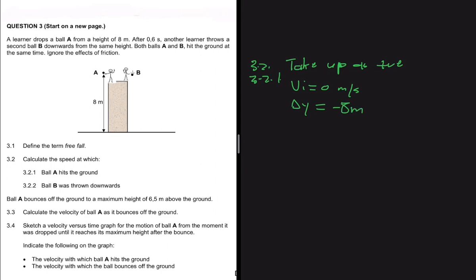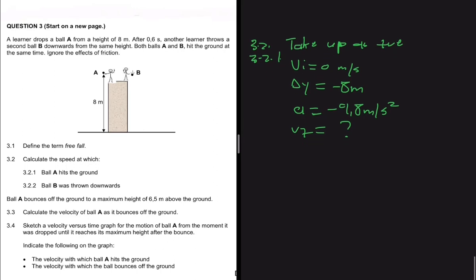We have Δy equal to minus 8 meters because the ball is going down and we take up as positive. We also know that acceleration is minus 9.8 meters per second squared. What we are looking for is vf.